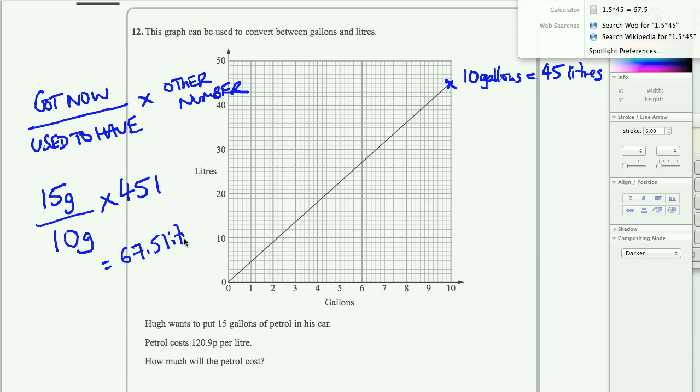Now, that gives us the number of litres from 15 gallons. But we've actually got petrol costing 120.9 pence per litre. Actually, if you look at this, this is another exchange. The exchange for this is 1 litre of petrol is equal to 120.9 pence.